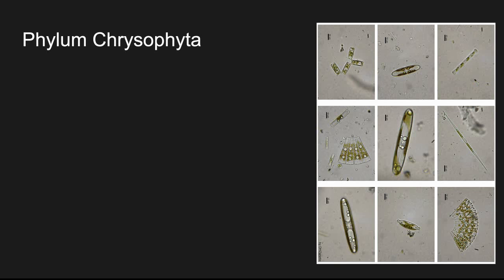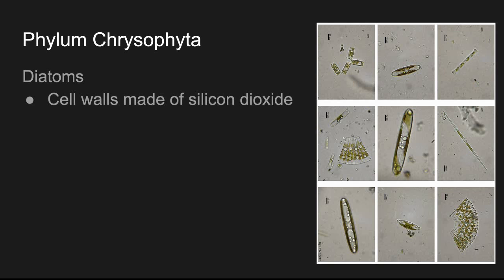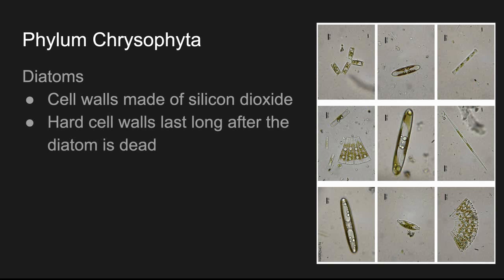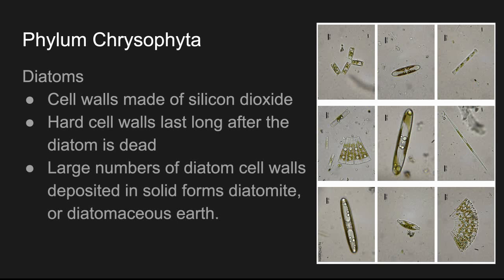Here's another phylum — these would not be green algae, as you can tell from this picture. Phylum Chrysophyta. A good example of chrysophytes would be diatoms. Their cell walls are made of silicon dioxide, which is not too dissimilar from glass — it's a hard substance. These would be microscopic crystalline cell walls. Their hard cell walls will actually last long after the diatom is dead, kind of like a seashell will last long after the bivalve that lived in it died. Large numbers of diatom cell walls deposited in solid form what's called diatomite or diatomaceous earth.